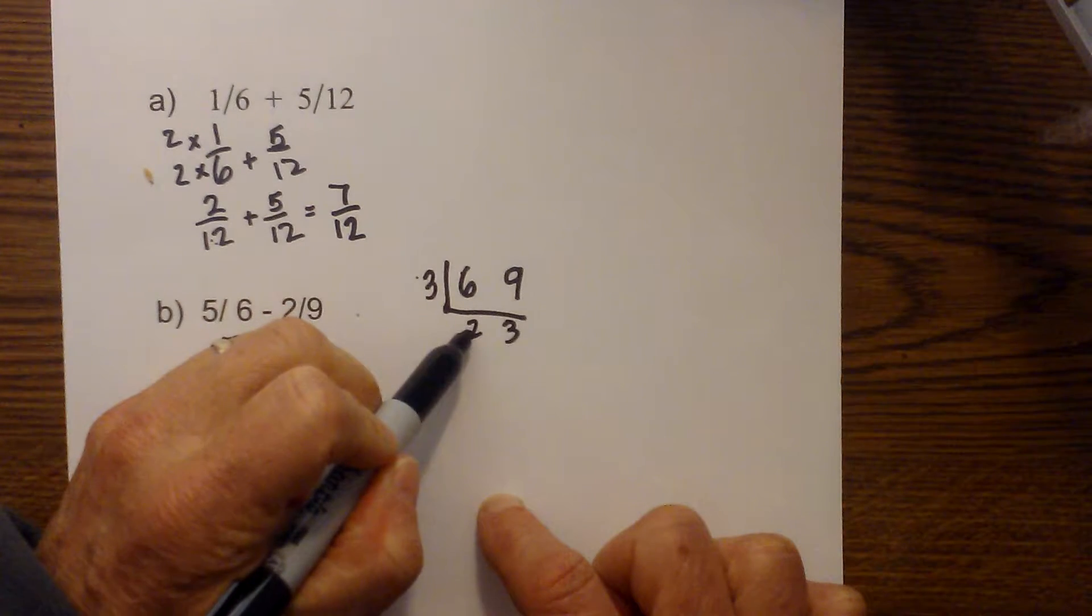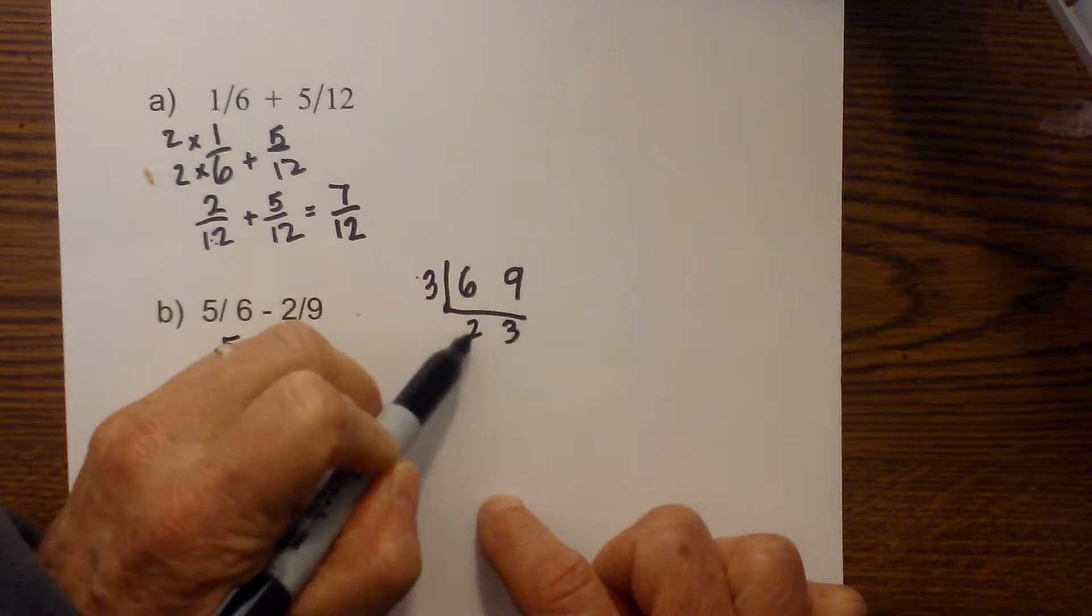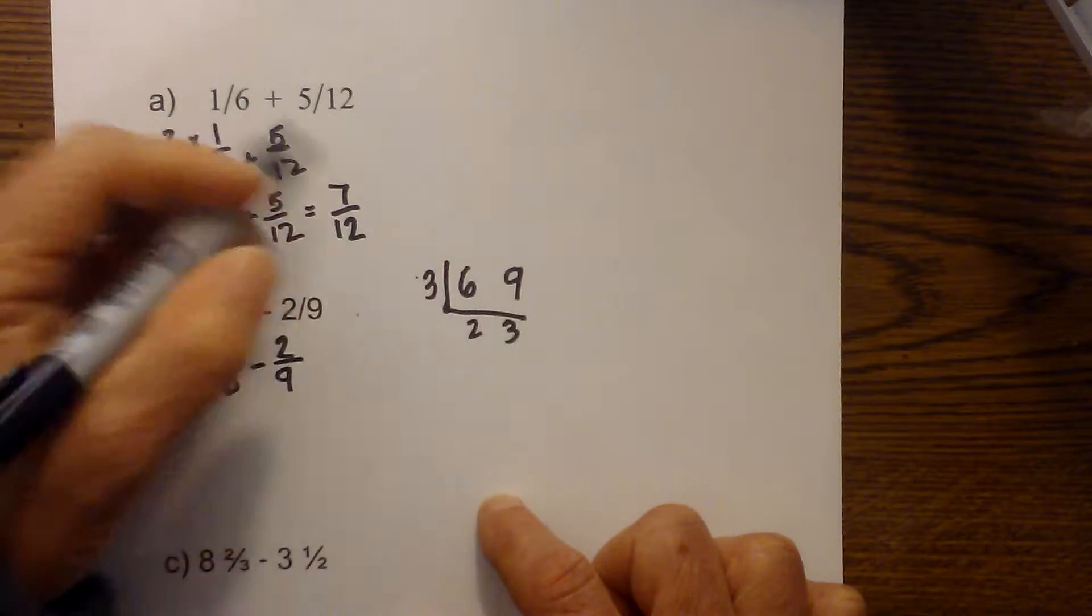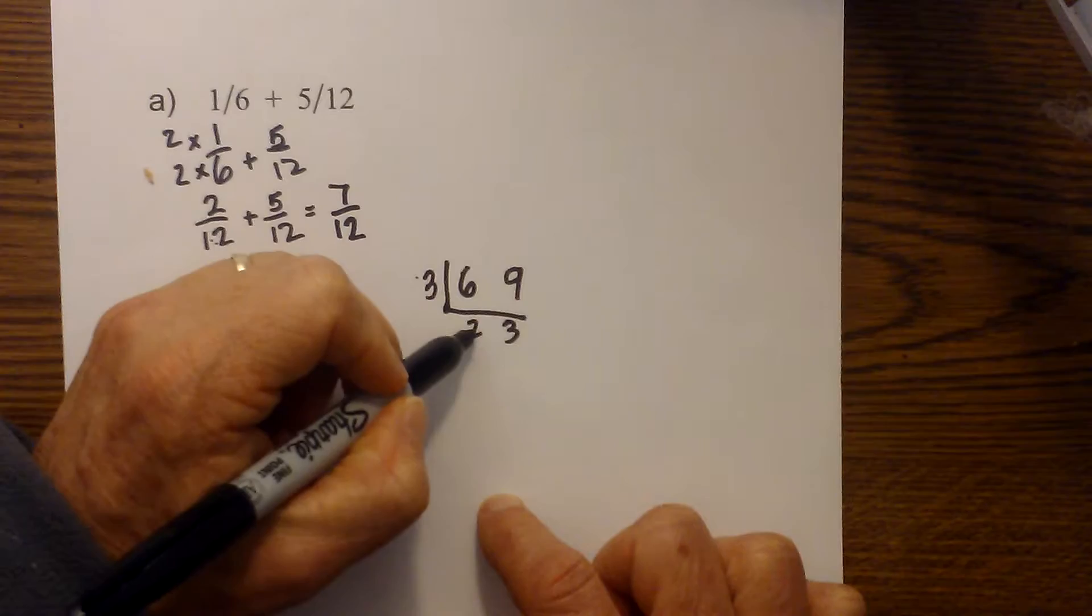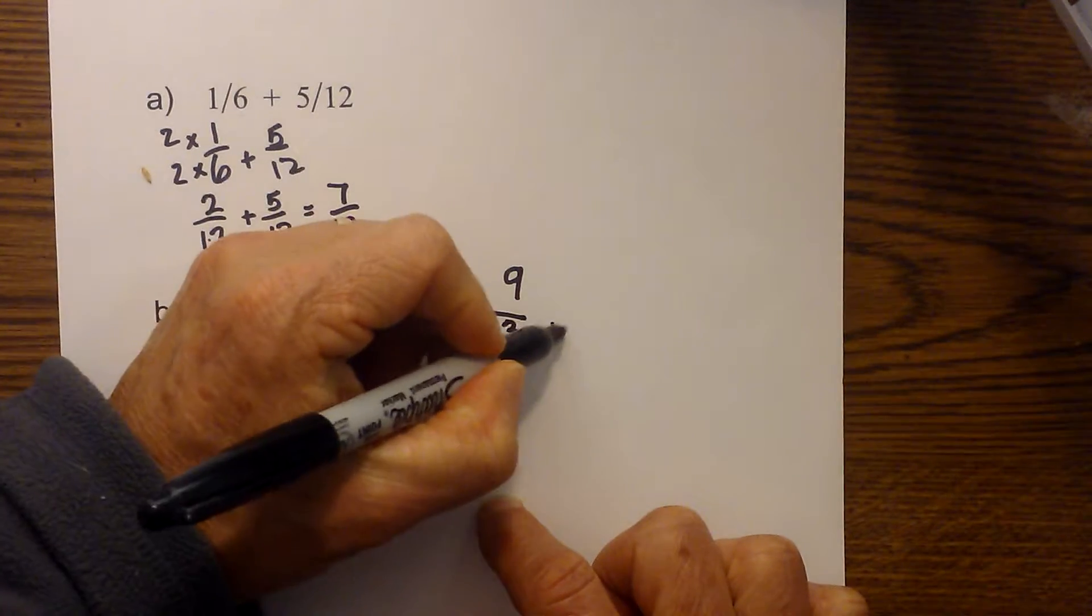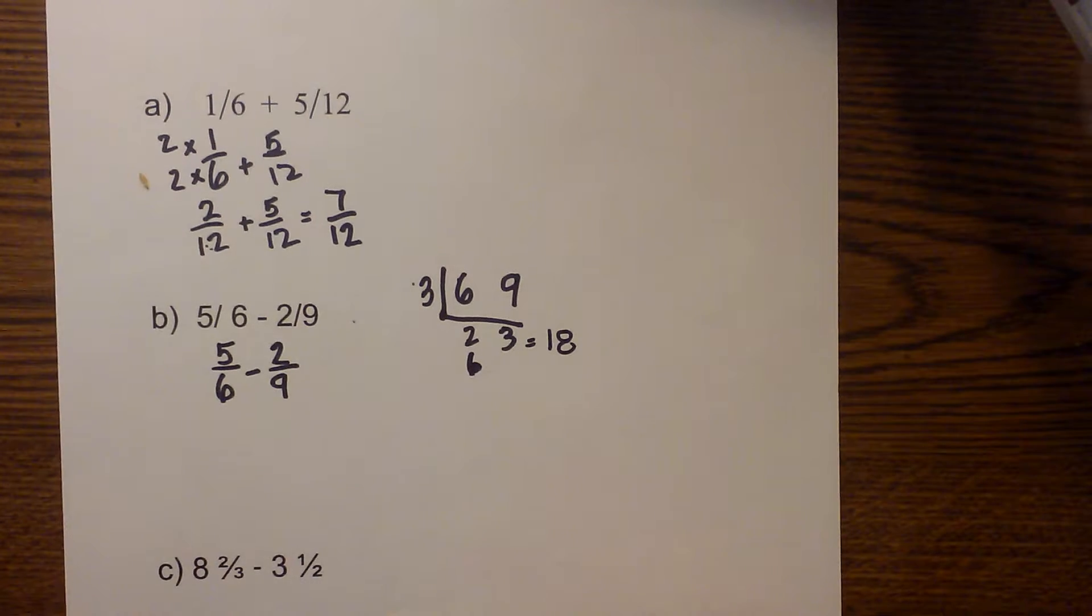Now, since two is prime, three is prime, they aren't divisible by anything but themselves. I then multiply the numbers on the outside. So three times two is six, and six times three is eighteen. So that is our common denominator.